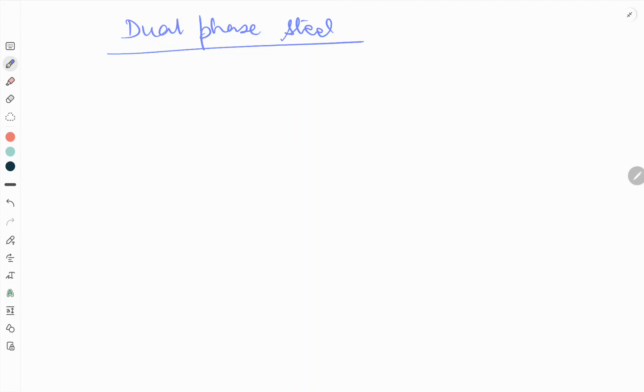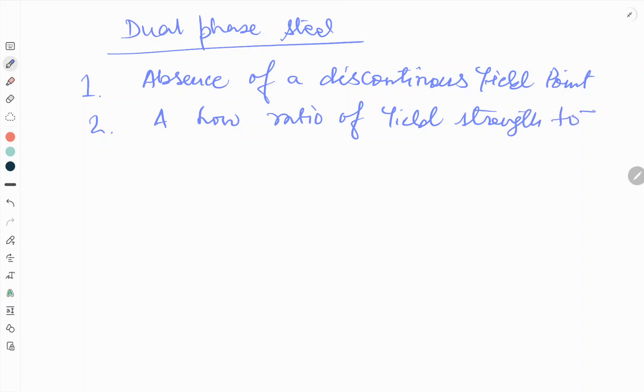Dual phase steels are characterized by five special effects: 1) Absence of a discontinuous yield point, 2) A low ratio of yield strength to tensile strength, 3) High work hardening rate, 4) High tensile strength, and 5) A large uniform elongation.